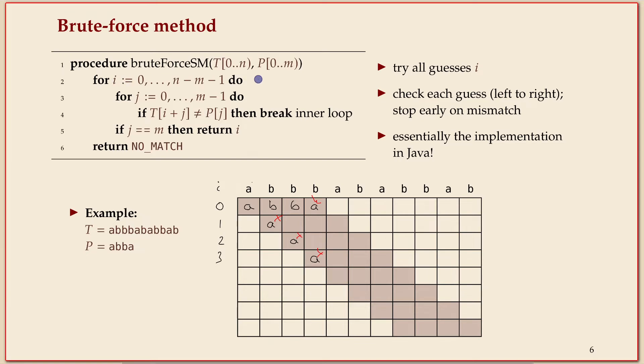If you look at the code above, this is also what it does. It goes through all the guesses and then it goes through all the positions in the pattern and compares the appropriate positions in text and pattern. If they don't match, then you break out of this loop.